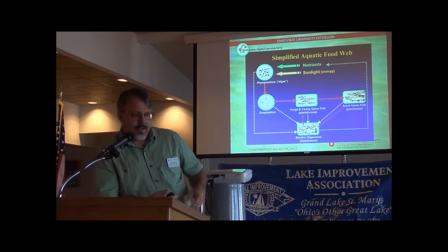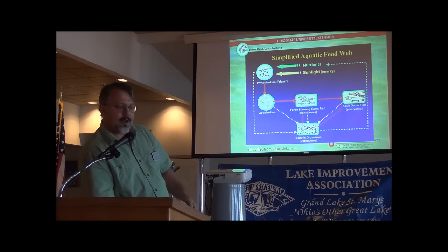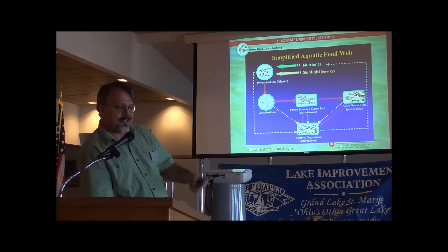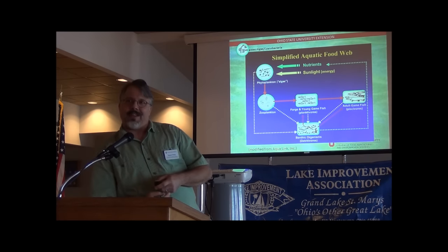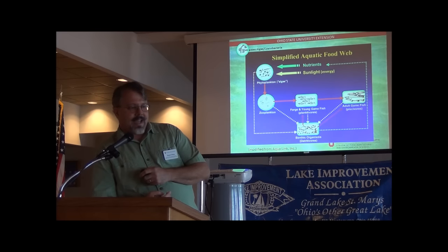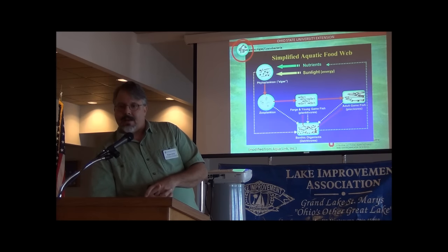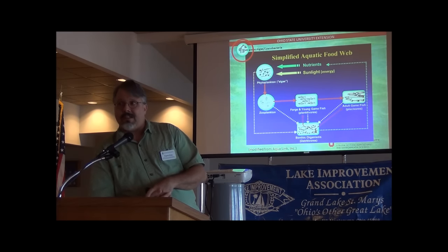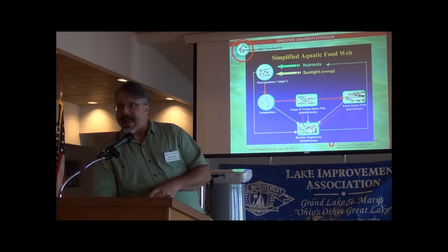Here's a simplified food web: true algae, the phytoplankton, feed the tiny bugs — the zooplankton — which feed the small fish, which feed the big fish. Blue-green algae, though, are way out in the corner of this food web. In bad situations they're toxic; in good situations, nothing really likes to eat them. Any energy that goes into fueling a large bloom of these organisms is pretty much an energetic dead end, and it provides competition for everything useful.